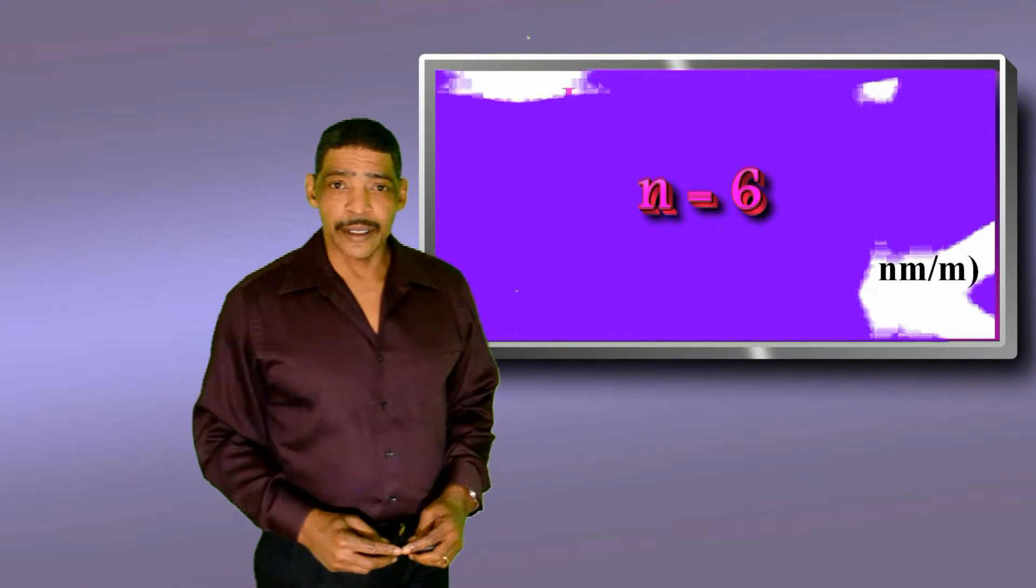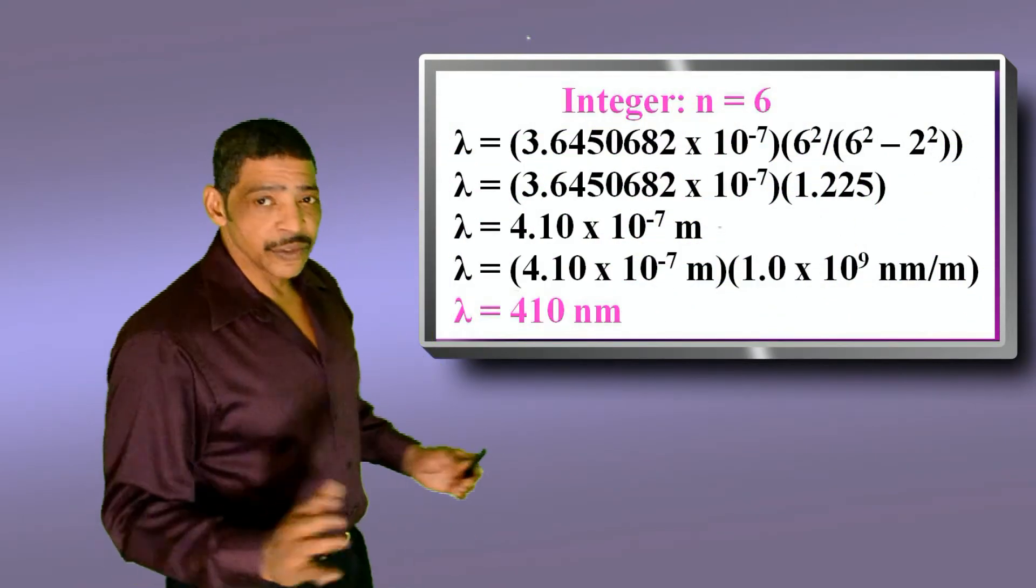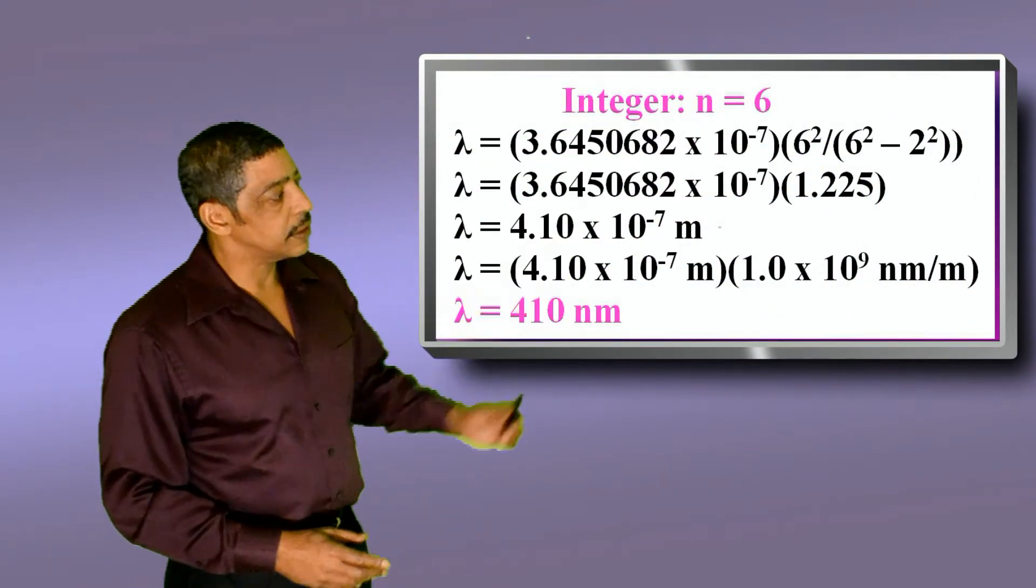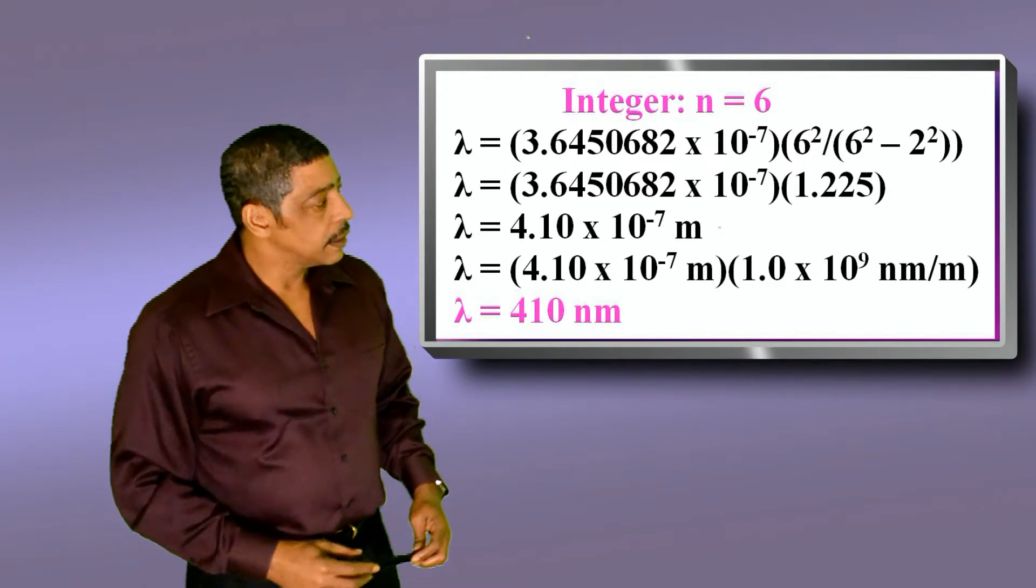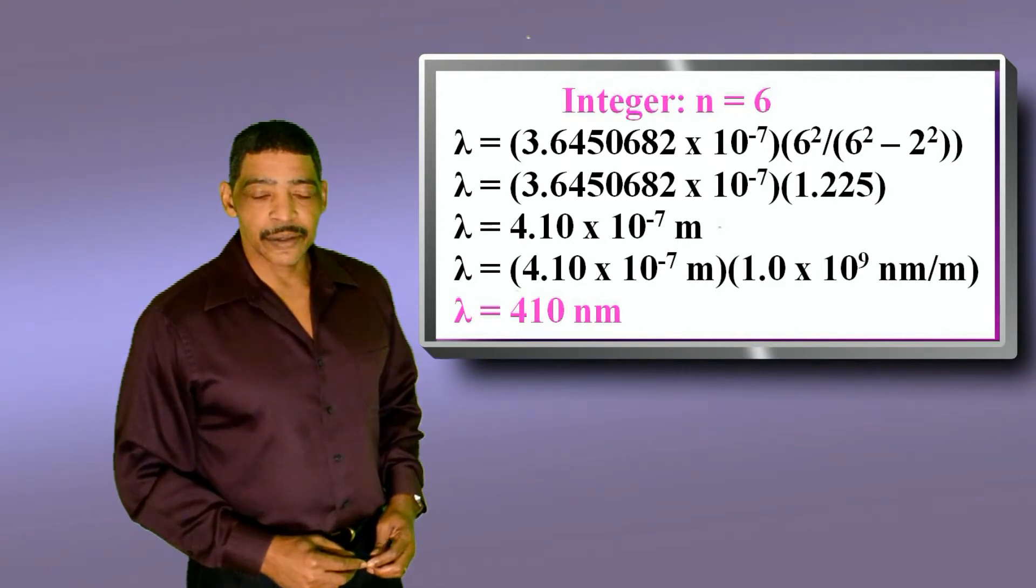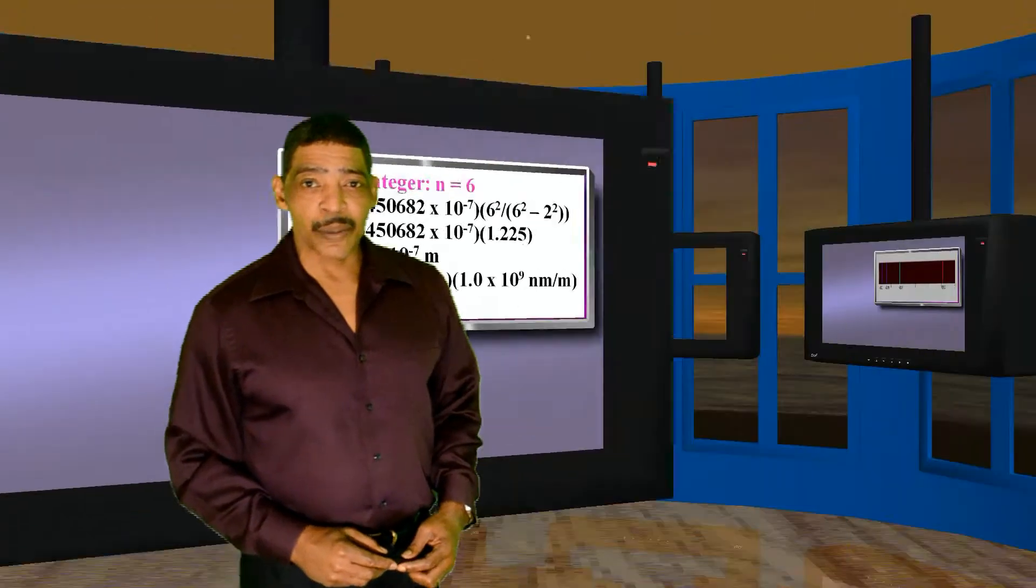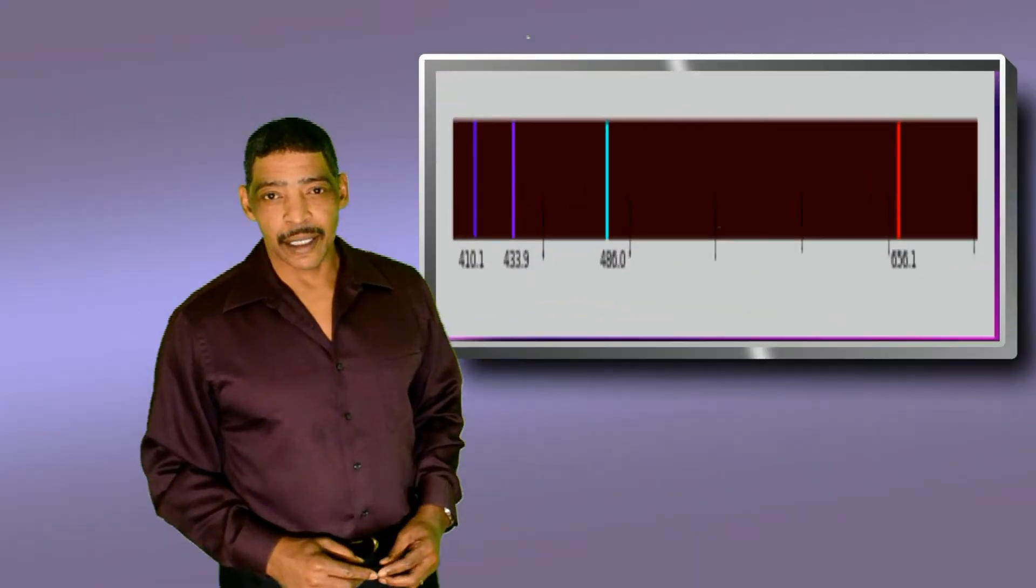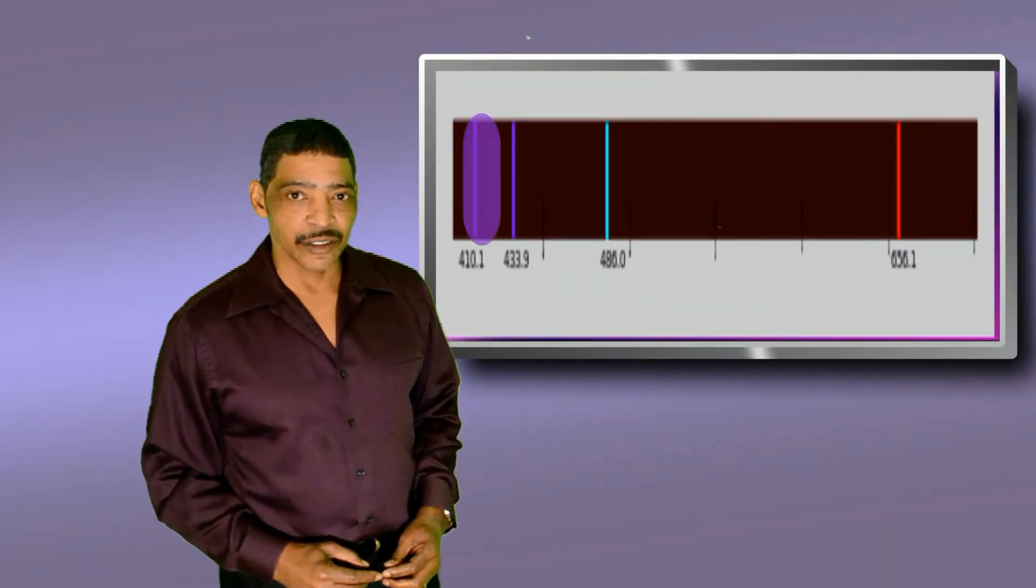And finally, when n is equal to 6, the result of the calculations will be 410 nanometers. 410 nanometers represents the violet line found in hydrogen's bright line spectrum.